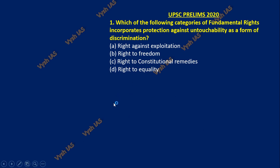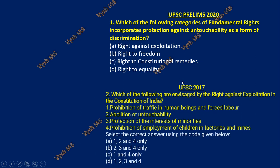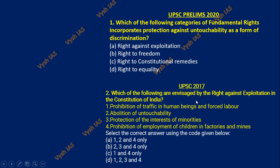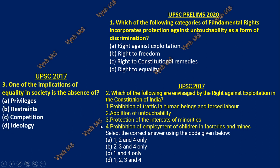Maybe you will not be able to answer these things because in NCERT they don't give you the details of article numbers. Another question from 2017: which of the following are envisaged by the right against exploitation in the constitution of India? They have given statements and you have to select the best combination. One more 2017 question: one of the implications of equality in society is the absence of what — privileges, restraints, competition, ideology? Equality, liberty, fraternity and all the words in the preamble have been very deeply analyzed and asked by UPSC year after year.